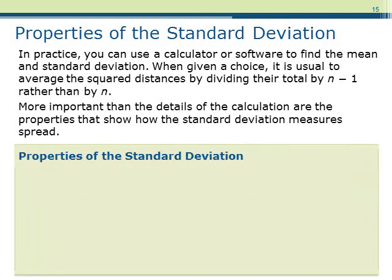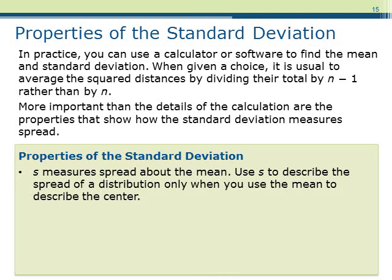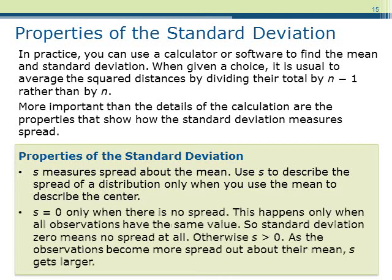Let's discuss how we interpret the standard deviation. First, s measures spread about the mean, so we only use it to describe the spread of a distribution when the center is described by the mean. If s equals 0, there is no spread — all observations are the same. As observations become further from the mean, the standard deviation becomes larger. In general, the smaller s is, the less spread there is; the larger s is, the more spread there is.